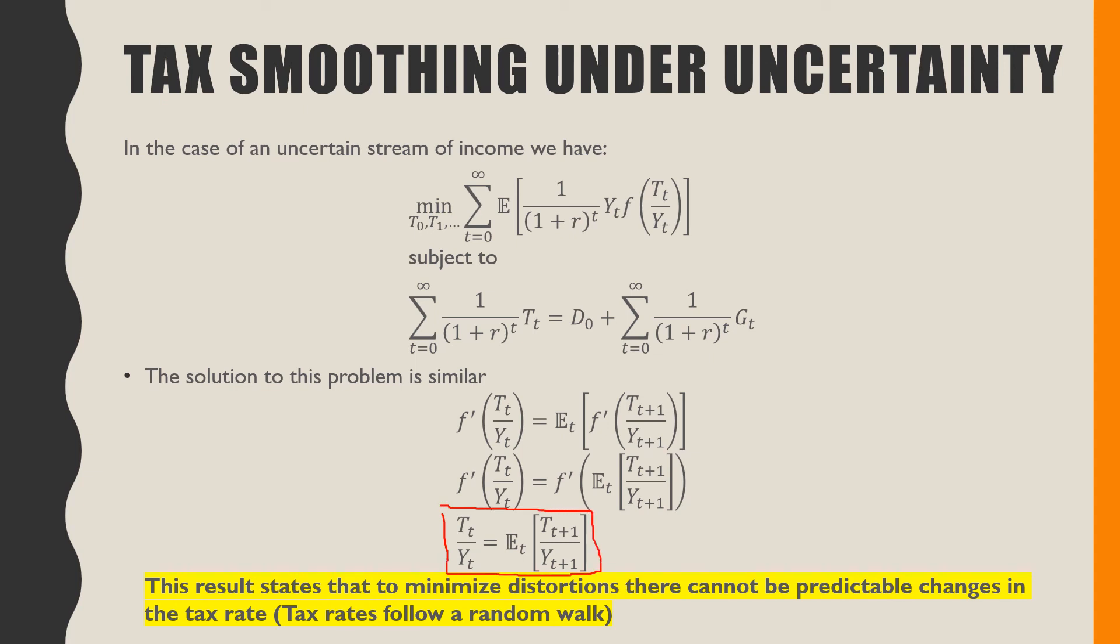This result states that to minimize distortions there cannot be predictable changes in the tax rate. Tax rates follow a random walk.